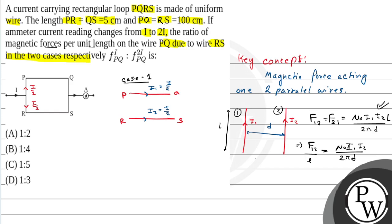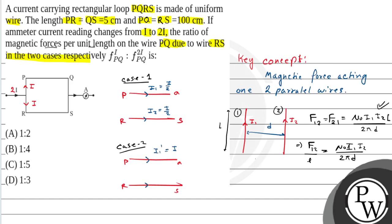In Case 2 with current 2I, this is the PQ branch. The current I1 dash equals I and I2 dash equals I. Since the force per unit length is proportional to I1 × I2 when D is the same, the product I1 × I2 is proportional to the magnetic force per unit length.